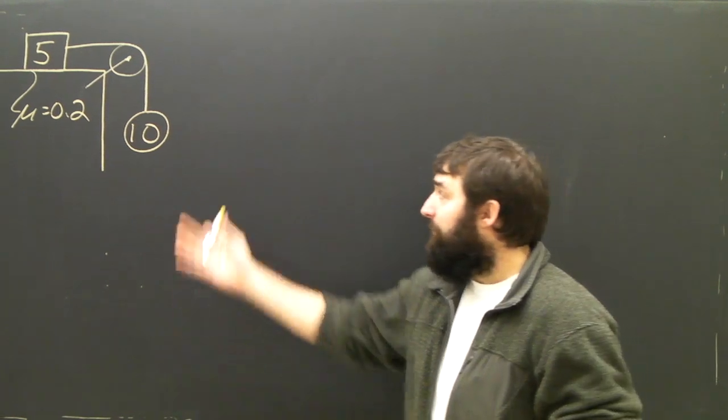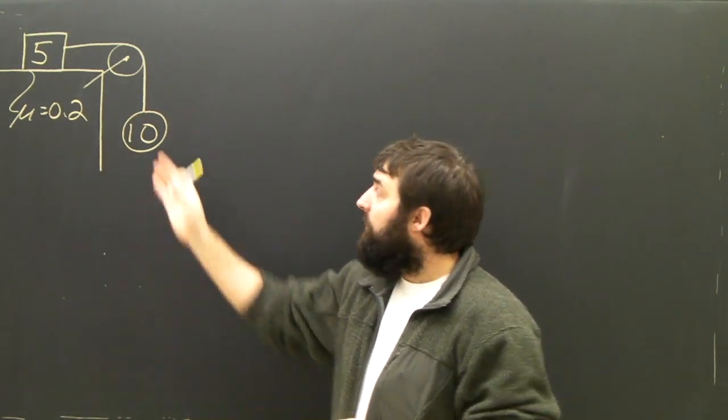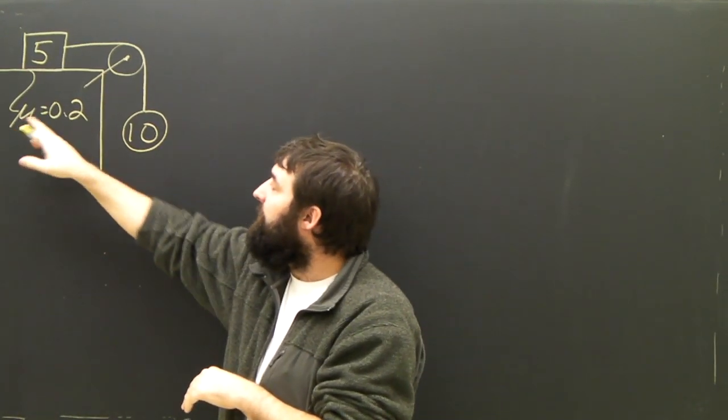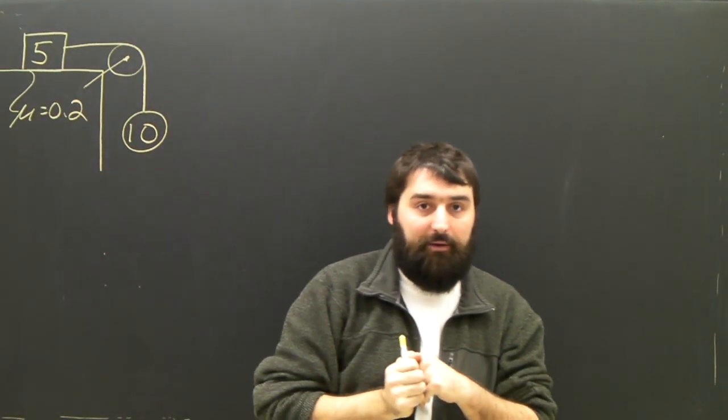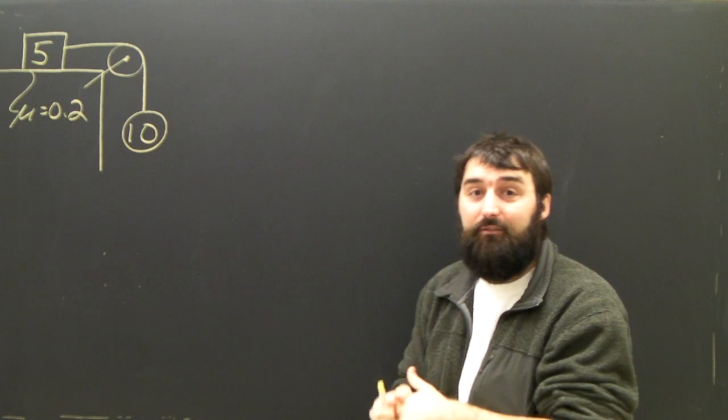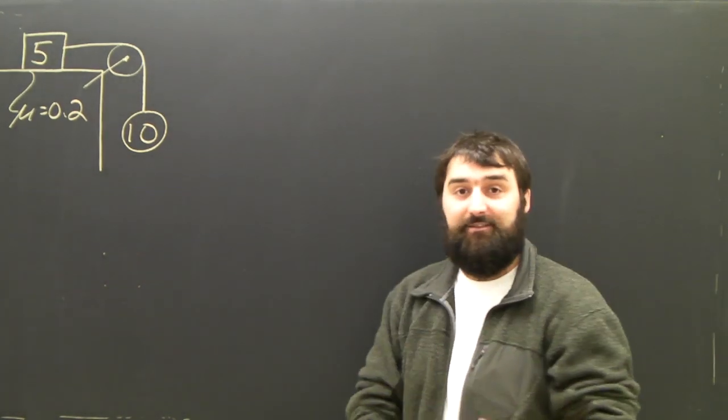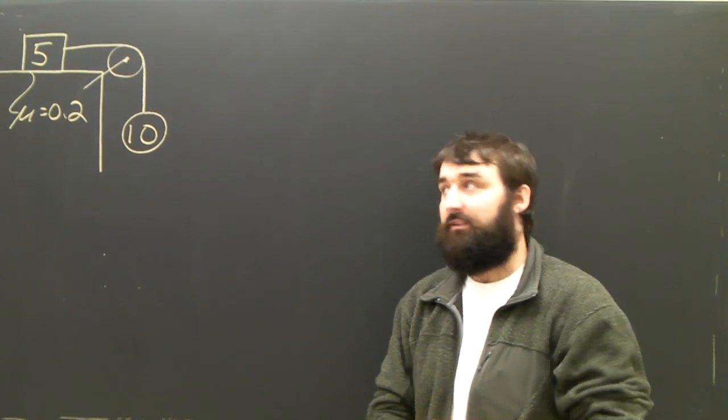Okay, so now we've got a pulley, but it's not quite as simple as before. The 5kg object is now on a horizontal surface with a coefficient of friction of 0.2 between the object and surface. The 5kg object is attached to the 10kg object with a perfectly light string over a perfect frictionless pulley.